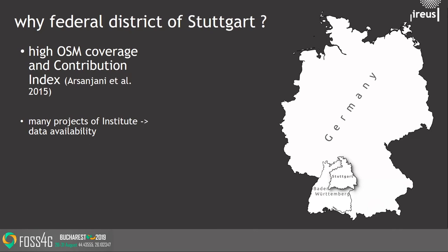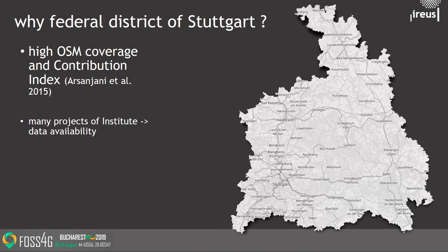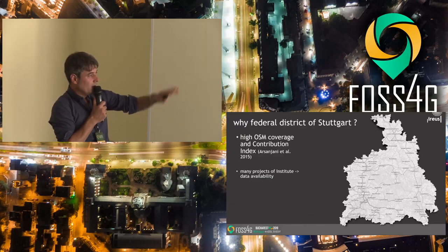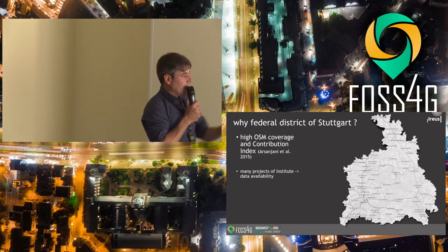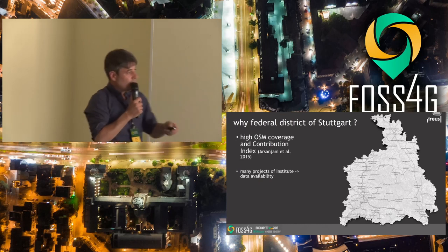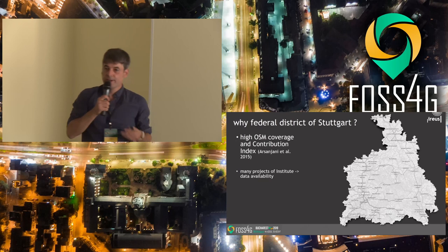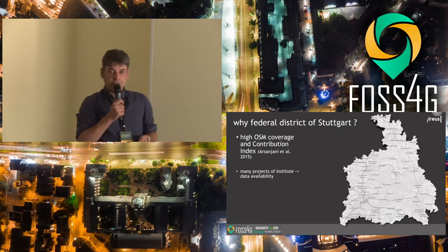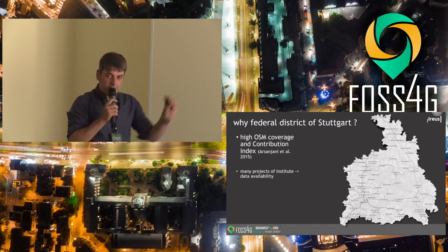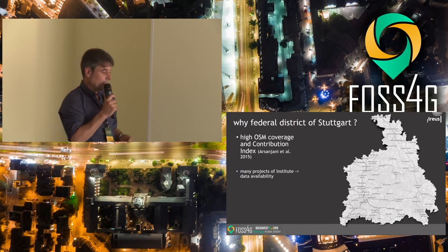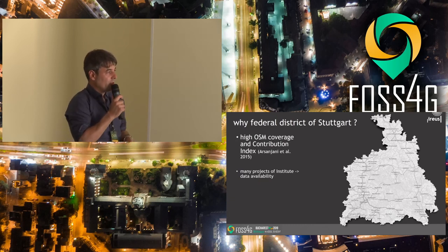Baden-Württemberg consists of four federal districts, one of which is the federal district of Stuttgart, which also holds the capital of the federal state. The economical center or basis of this district is around Stuttgart. There are many sub-centers — Heilbronn, Ludwigsburg, and so on — with high economical capacity, whereas the eastern and central parts of the district are rather rural areas with small municipalities and small villages, but some global players and hidden champions inside some of these municipalities. This has some influence, as you will see later on the maps where we compare the performance of the predictors.